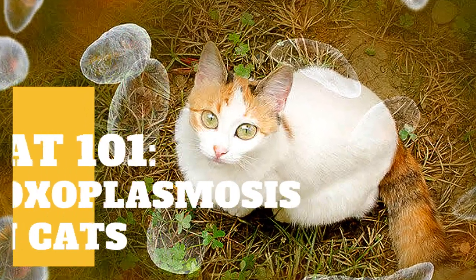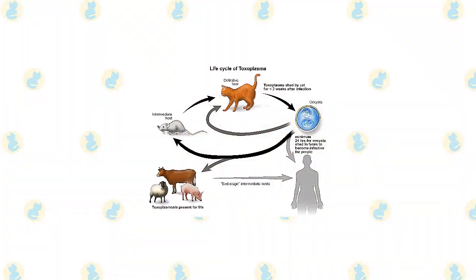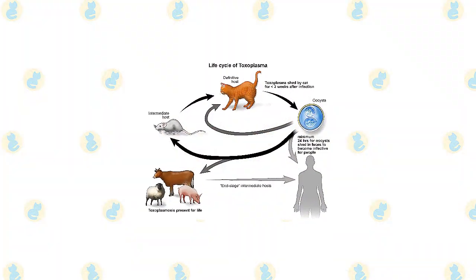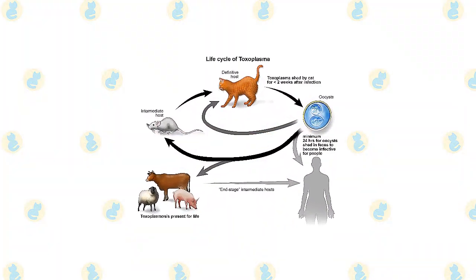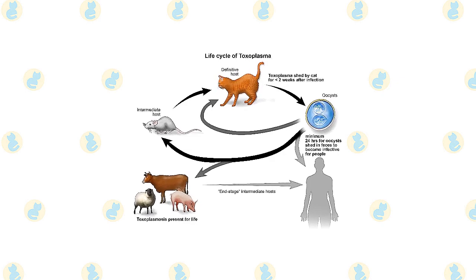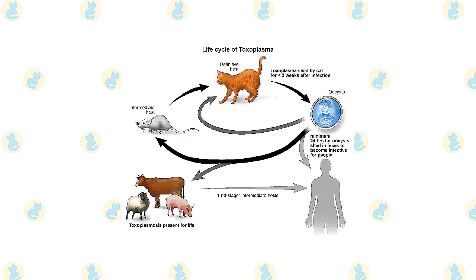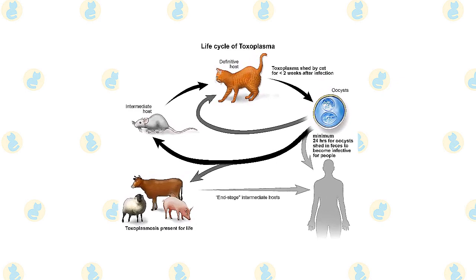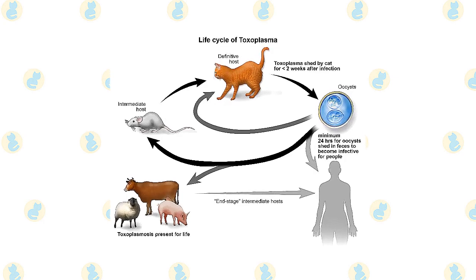Toxoplasmosis is a disease caused by the parasite Toxoplasma gondii, which is a single-celled parasite, T. gondii. It is one of the most prevalent parasite illnesses, infecting virtually all warm-blooded animals, including people and pets.